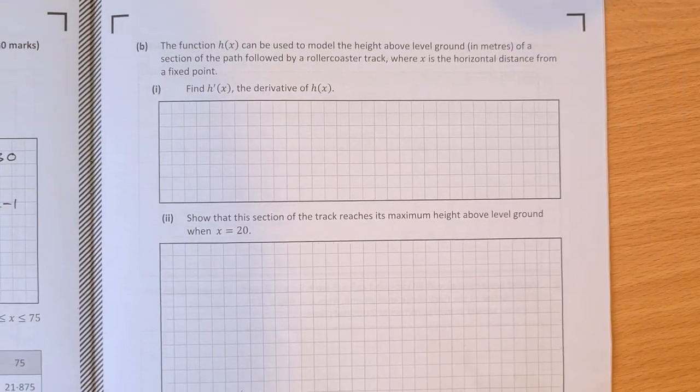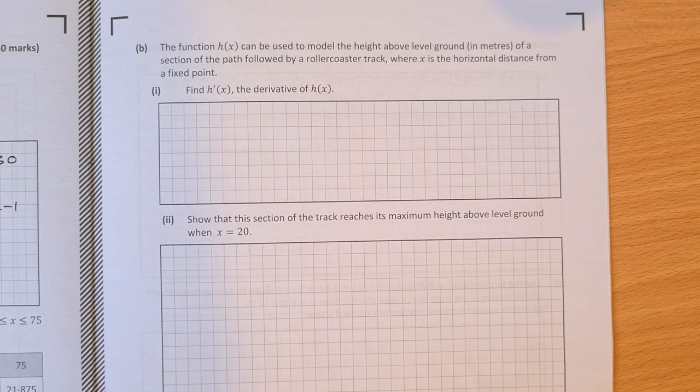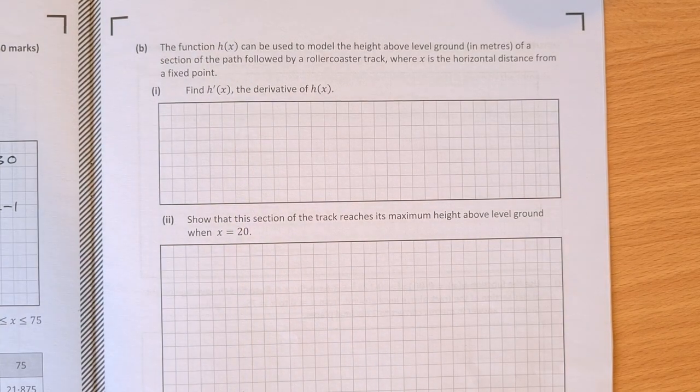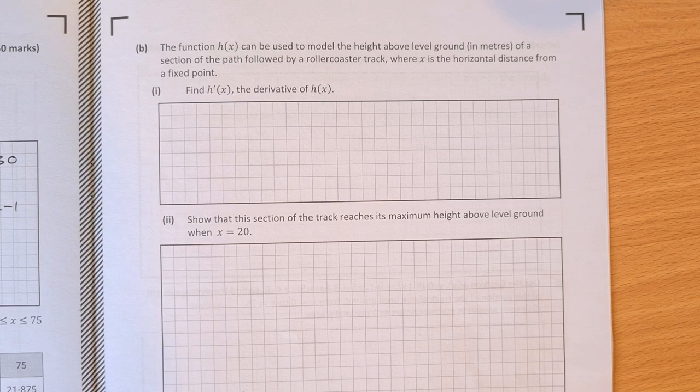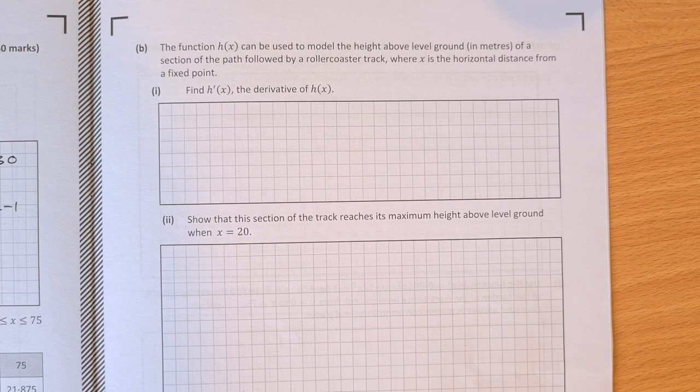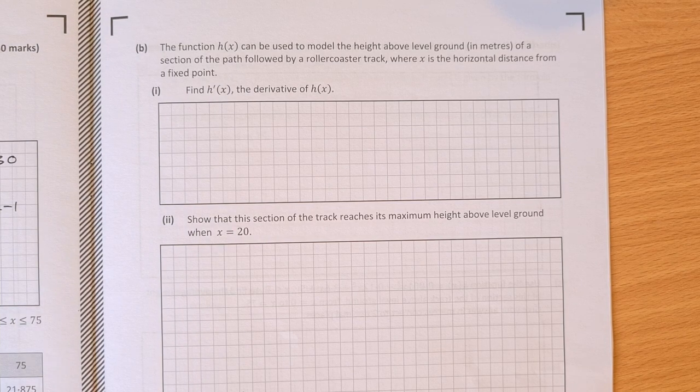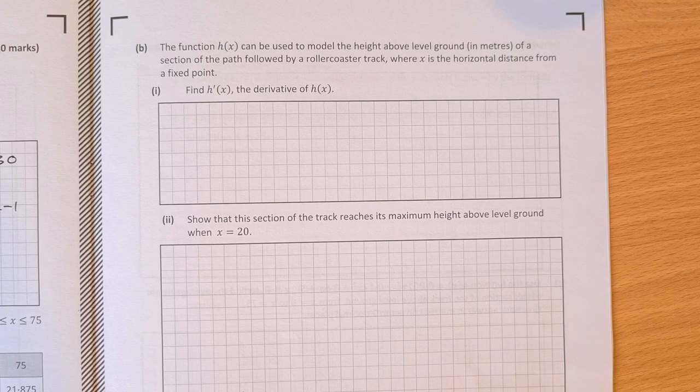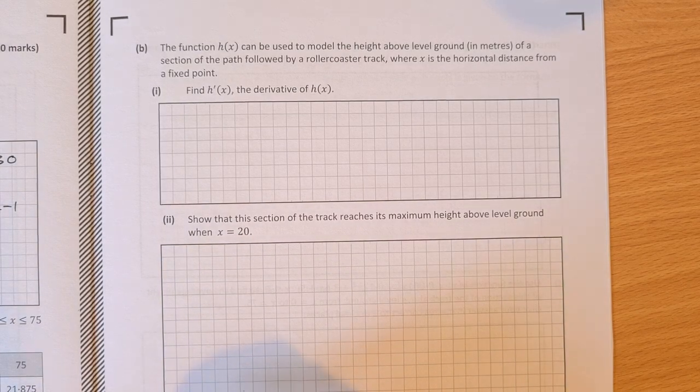On to part B. The function h of x can be used to model the height above level ground in meters of a section of the path followed by a roller coaster track, where x is the horizontal distance from a fixed point. Find h prime of x, the derivative of h of x. So we just need to differentiate h of x.